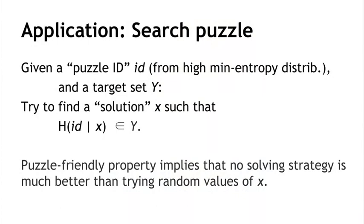The application we're going to use of this is we're going to build a search puzzle — a mathematical problem which requires searching a very large space to find the solution, with no shortcut other than searching that large space. The idea is: given a puzzle ID chosen from a high min entropy distribution, and a target set y which someone wants the hash to fall into, we try to find a solution x such that the hash of the puzzle ID together with x gives a result in the set y. The puzzle-friendly property implies there's no solving strategy much better than trying random values of x. As long as we can generate puzzle IDs in a suitably random way, we can pose a puzzle that's difficult to solve, and we're going to use that when we talk about Bitcoin mining.